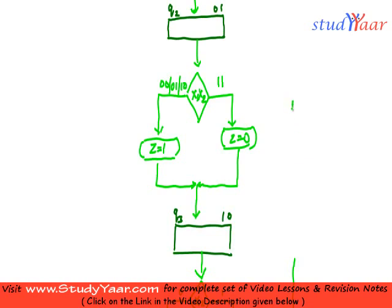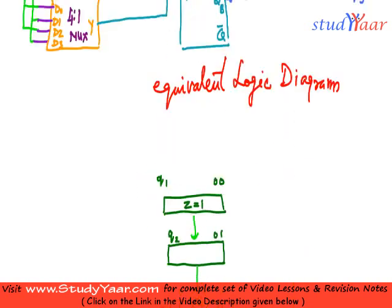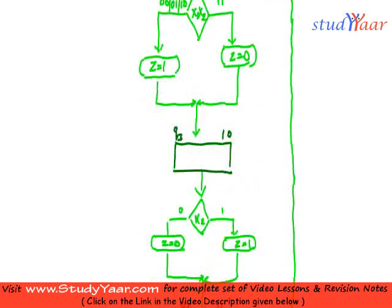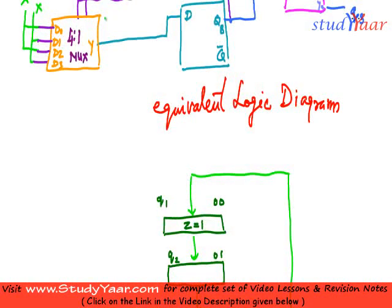So let me just complete this ASM chart — I go back to q1 like this. Now the question is you have to realize this using D flip-flops. This is another example that we are going to look at — the final example for this session.